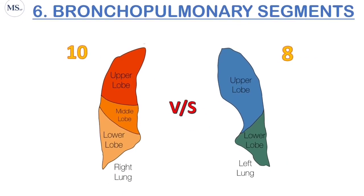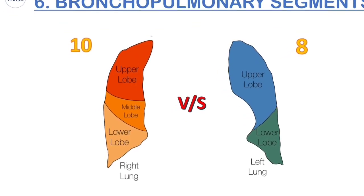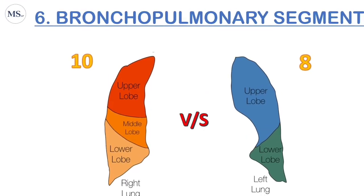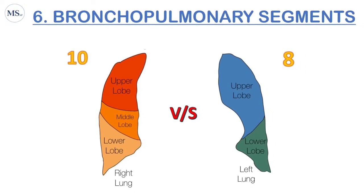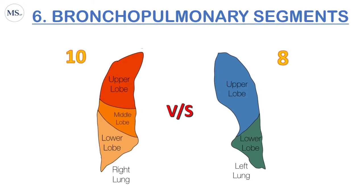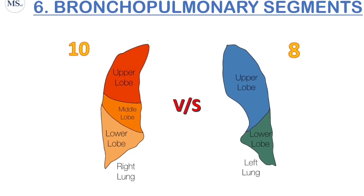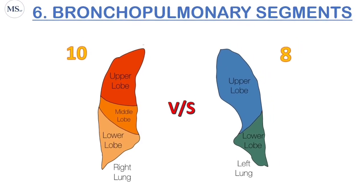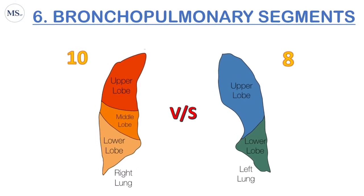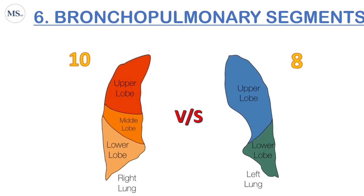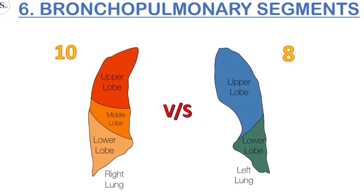The sixth difference is also important: bronchopulmonary segments. In the right lung there are 10 segments — the upper lobe has three segments, the middle lobe has two segments, and the lower lobe has five segments, totaling 10 segments. In the left lung there are only eight segments — the upper lobe has four and the lower lobe has four.